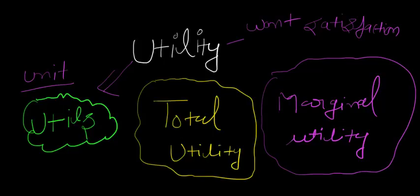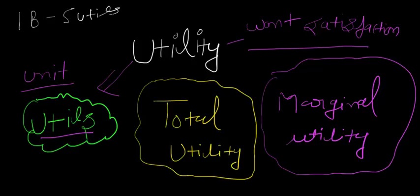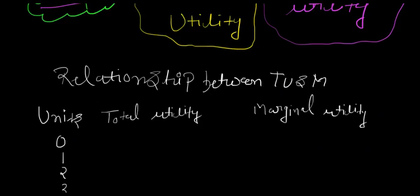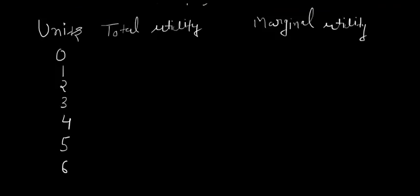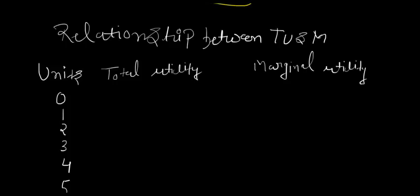You measure utility in utils. So when I eat a burger and I get some satisfaction, I can give it an imaginary number which will always be in the form of utils. Let us say when I consume one burger then I get five utils — simple as that. That is basically giving a denomination to your satisfaction. Moving ahead, the utility concept talks about total utility and marginal utility — and this is better understood through the relationship between total utility and marginal utility.